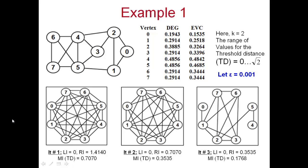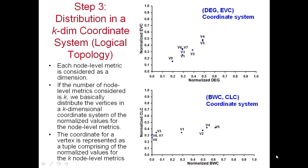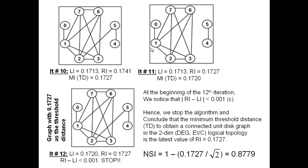You can perform the same calculations using betweenness and closeness centrality. Because vertices are more spread out in that coordinate system, the minimum threshold distance needed to get a connected graph will be larger than 0.1727. Dividing that larger value by √2 and subtracting from 1 will yield a network level similarity index less than 0.8779.